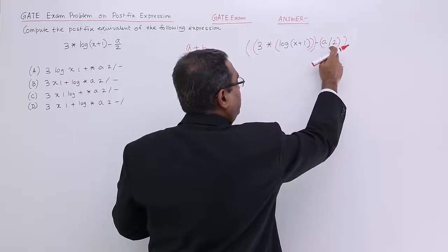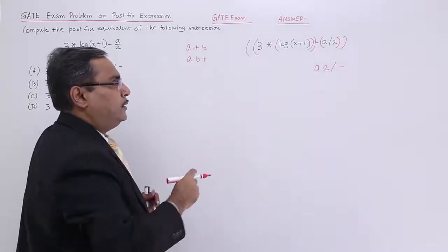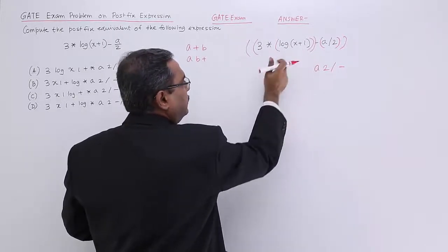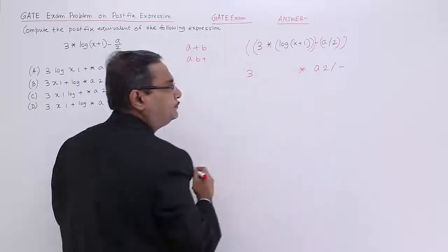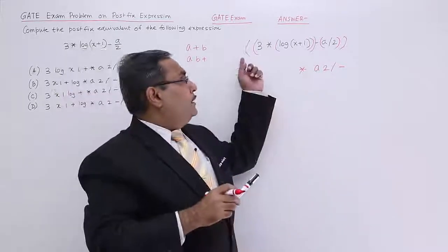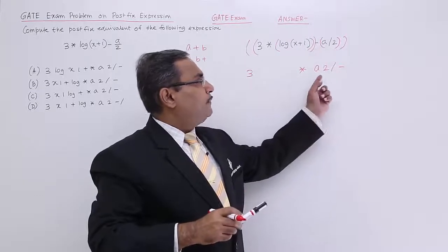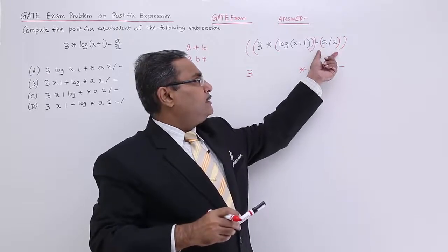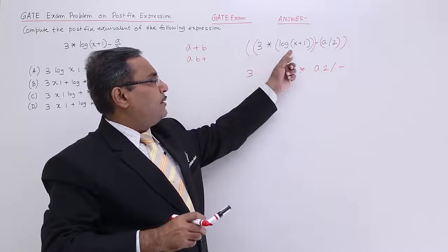And this is very simple to write. That is a 2 slash. Now, what about this one? This is nothing but 3 into this term. So 3 will be there. This term will be written and star will be coming. Again, I am repeating. This minus this. So I shall be having this and this and then minus. What about this? This is a 2 slash.